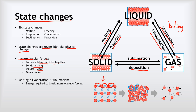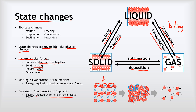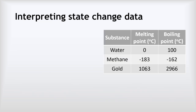When we're melting, evaporating, or subliming, energy is being used to break those intermolecular forces. When we do the opposite processes — freezing, condensation, and deposition — energy is released by forming intermolecular forces. So we break intermolecular forces during melting, evaporation, and sublimation, and we make them during freezing, condensation, and deposition.